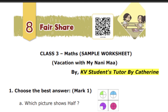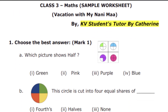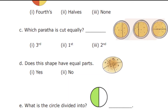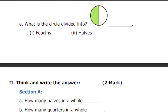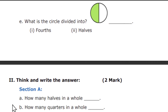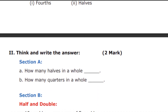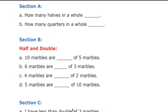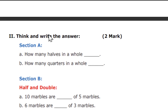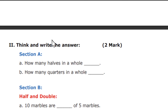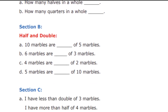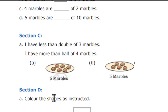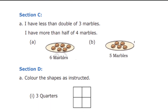Let's go back to the sample worksheet. We have choose the best answer, think and write the answer, with session A, session B, and session C carrying two marks each. In session C, you have to think and write — every question requires thinking, so do not rush. When coloring the shapes as instructed, use your crayons or color pencil. Do not use sketch pens because they make an impression on the next paper — always use color pencils.